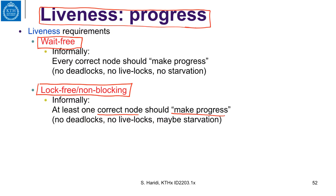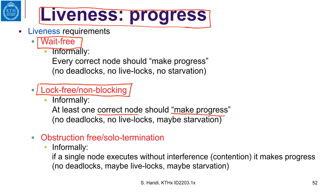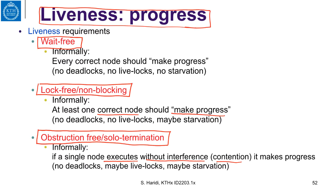The third property some algorithms have is called obstruction freedom or solo termination. Informally, if we have multiple processes and one of them can execute without interference or contention, then it is guaranteed to make progress. An algorithm we will discuss in a later lecture will have this obstruction freedom property.